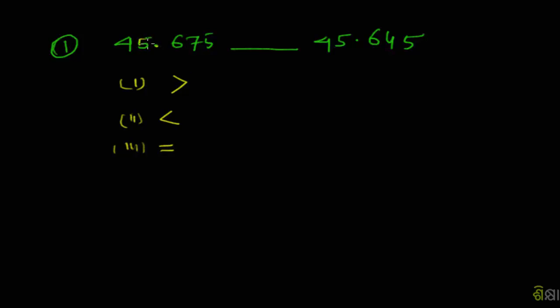Let's look at how we do this. Let me show you: 45 and 675, versus 45 and 645. Let me show you the difference. Four, four, five, six, seven, six, five. Let me show you the difference. Seven is greater than four. This is the difference.